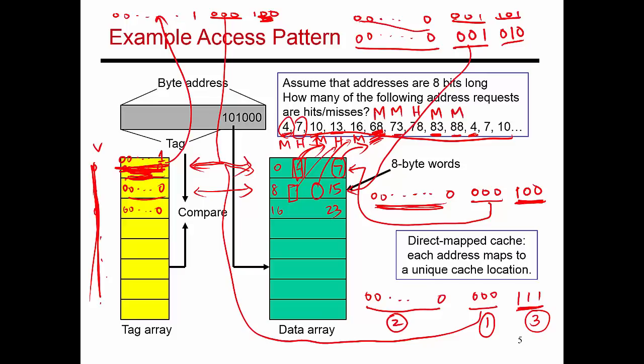And so when I try to access byte 4, it turns out to be a cache miss. So this is also a miss. The access to 7 turns out to be a hit again. Just as the access to 4 brought an entire block in and led to a hit on 7, same way when I have a miss on 4 and bring an entire block in, the next access to 7 turns out to be a hit.